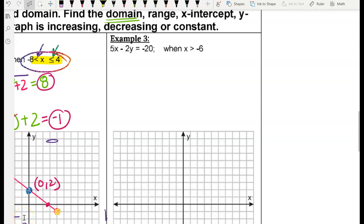Okay, example 3. It appears that we are using the standard form here, or they gave us the standard form. 5x minus 2y equals negative 20, and we are asked to graph only when x is bigger than negative 6. Since we don't have two endpoint students, this is going to be a ray. We are going to make just a table, starting with an x value of negative 6. Whatever value they give you, we are going to start with that.